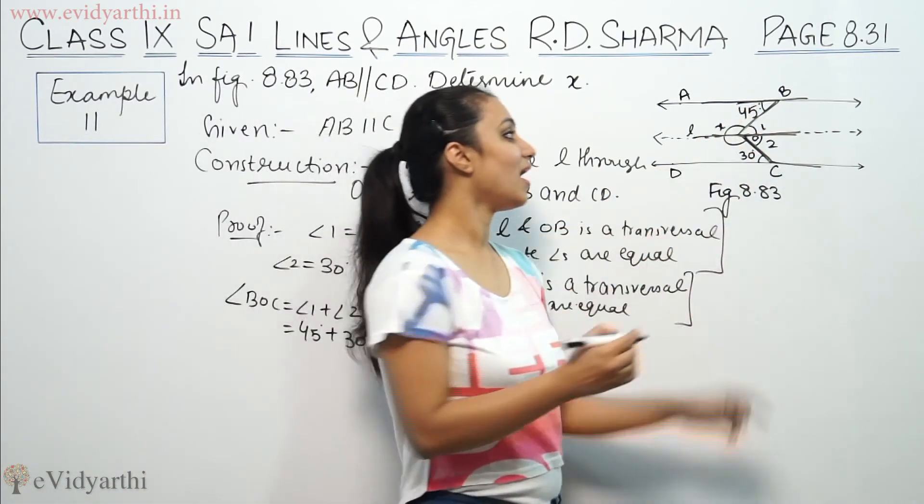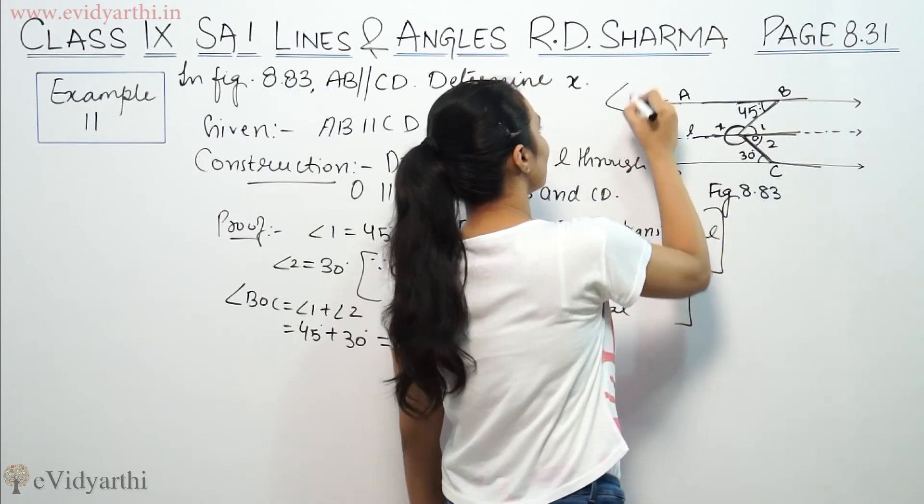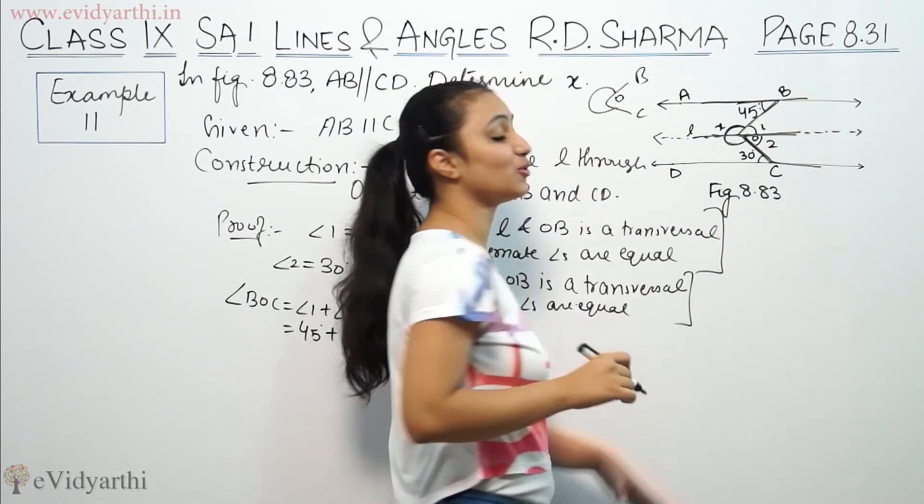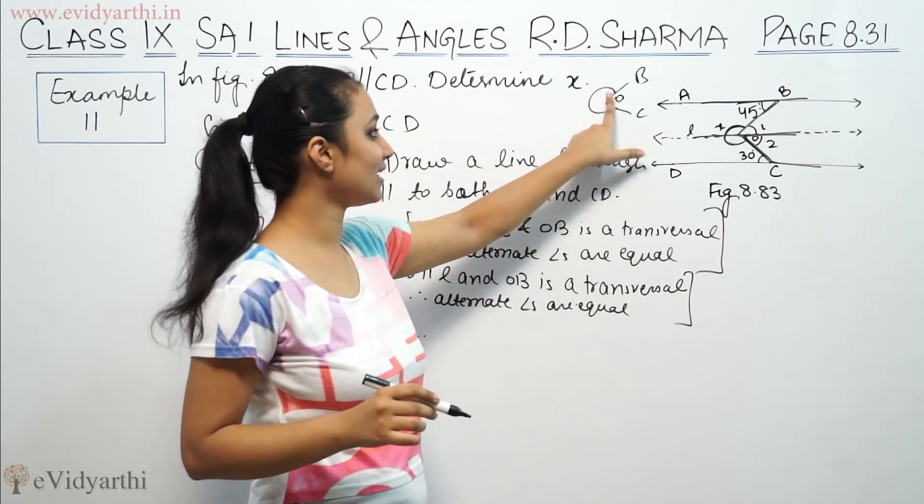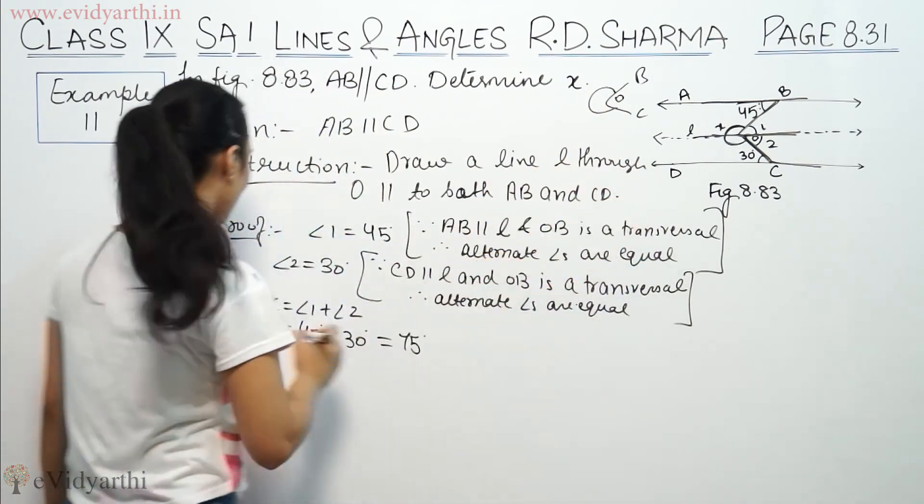This is BOC. If you need angle x, this is the BOC we need. So if you remove this part from 360, you will get the rest of the part.